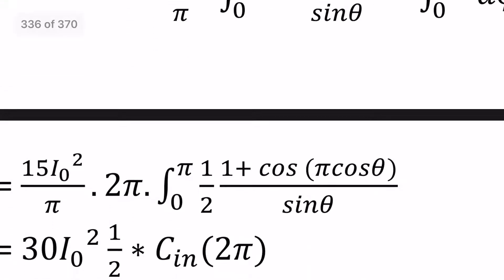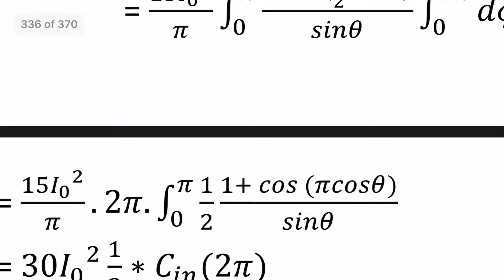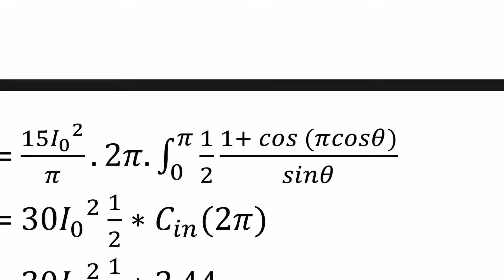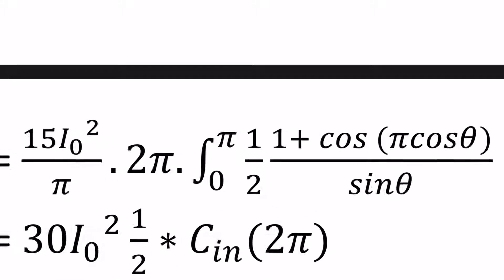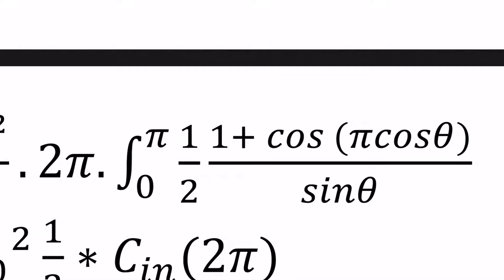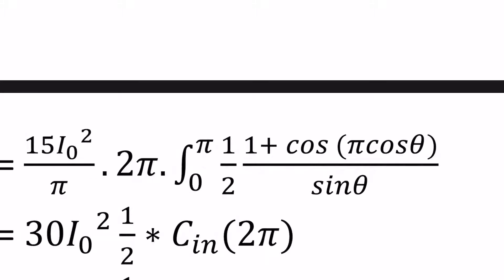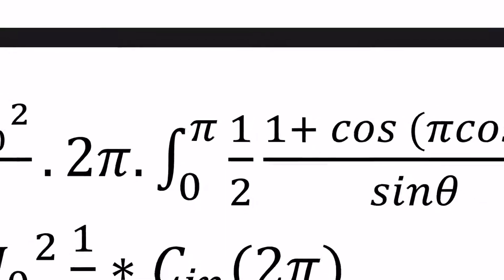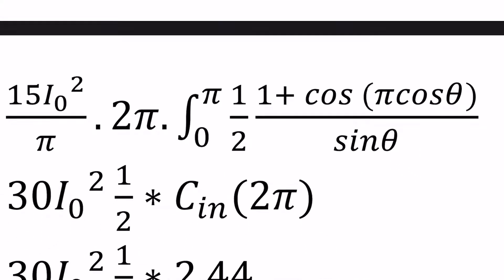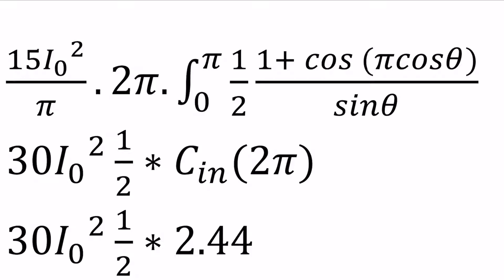With respect to theta, we integrate from 0 to pi: 1/2 × [cos(π/2 · cosθ) / sinθ]² · sinθ dθ. This involves the cosine integral equation. The integration of 0 to pi of [1 + cos(π cosθ)] / sinθ involves cosine integral terms — cosine integral of 2pi.